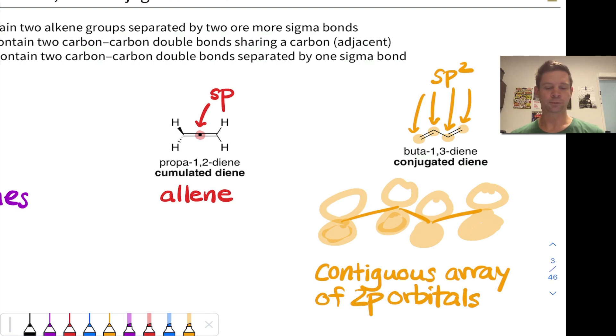And when those atoms over which the electrons are delocalized are carbons, it's known as a conjugated diene. So we've got the hallmark of conjugation here, a contiguous array of 2p orbitals.